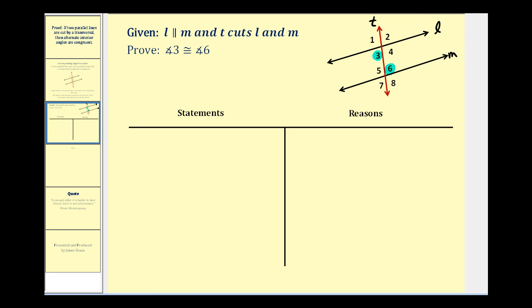Before we do the proof, we should think about our plan to show that these two angles are congruent. The corresponding angle postulate tells us that we can assume corresponding angles are congruent if we have two parallel lines cut by a transversal. So if we could show that angle three is congruent to angle two, and since angle two and angle six are corresponding angles, angle three would also be congruent to angle six. And since angle two and angle three are vertical angles, they are congruent — so that's going to be the outline of our proof.